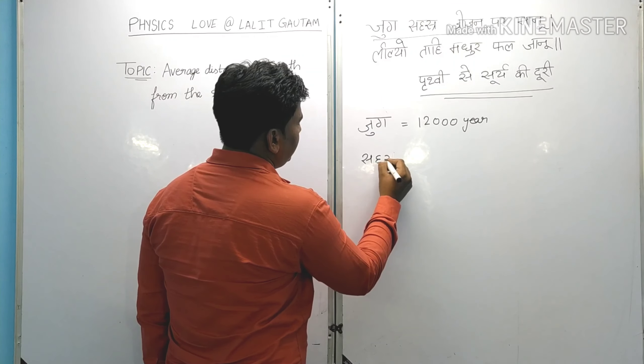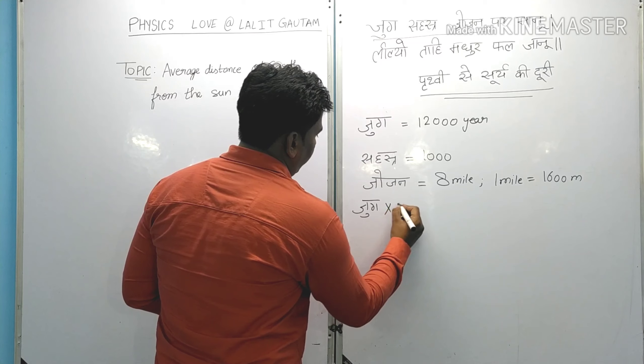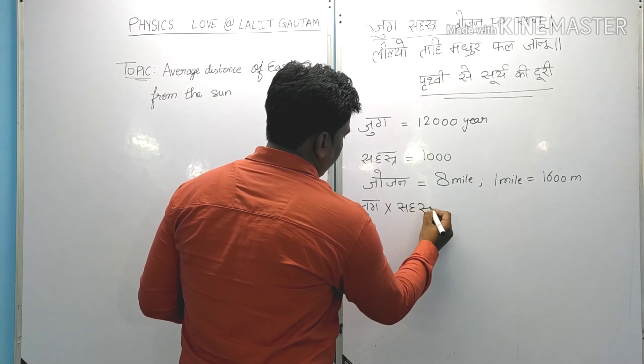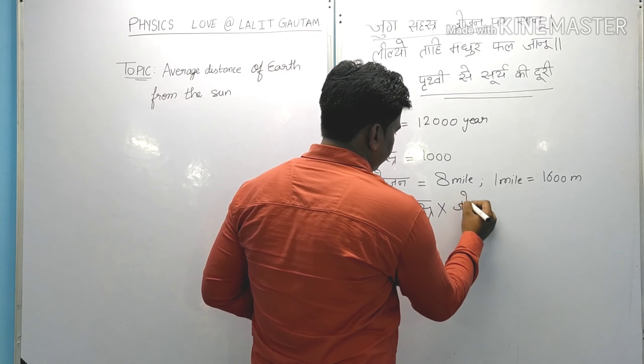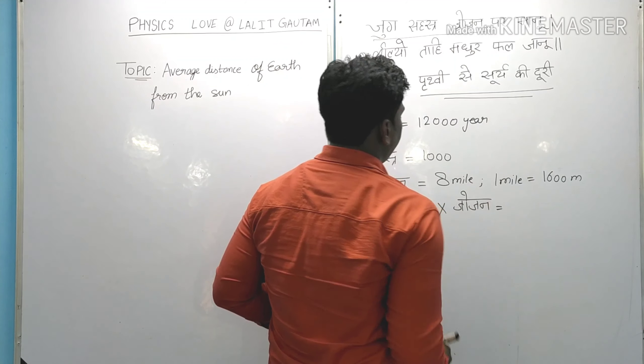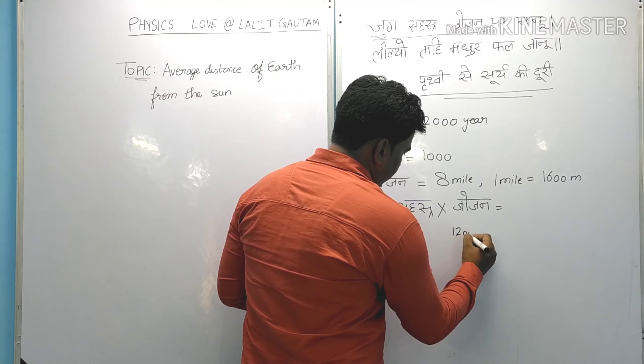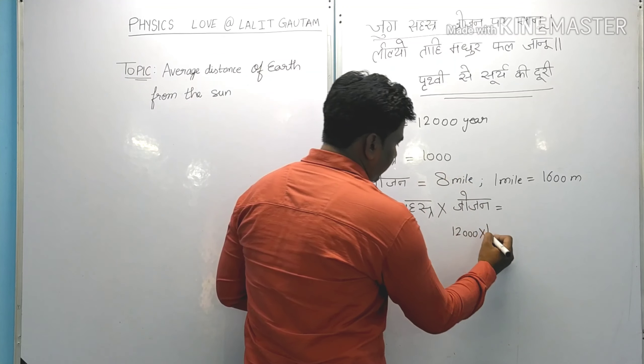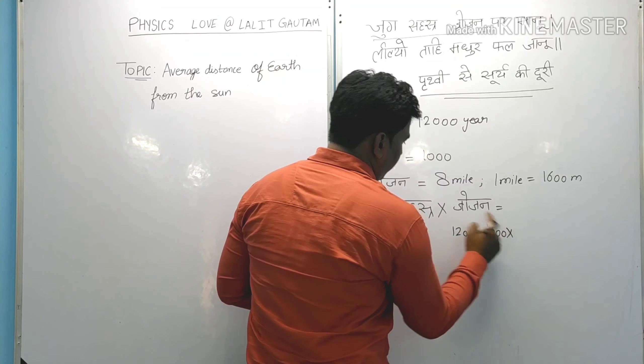And 1 mile is equal to 1,600 meters. So when I multiply these three precious words from the chopai of Hanuman Chalisa — Jugh multiplied by Sehastra multiplied by Jojan — that is 12,000 multiplied by 1,000 multiplied by 8 miles, and 1 mile is 1,600 meters.